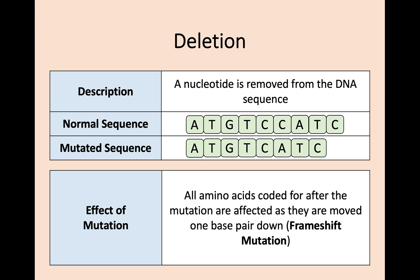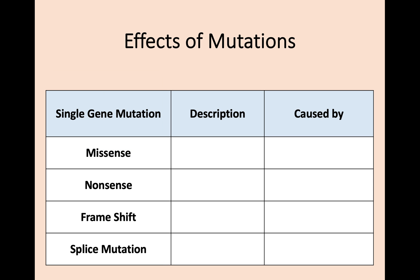So that's the three different types of single gene mutation, but there are different effects. We're going to look at four different types of effects: the missense, nonsense, and frame shift that we've already discussed, plus a splice site mutation. It can be quite useful to have some sort of table to go through these, because as I said, there's a lot of new information in mutations with a lot of different parts to remember.